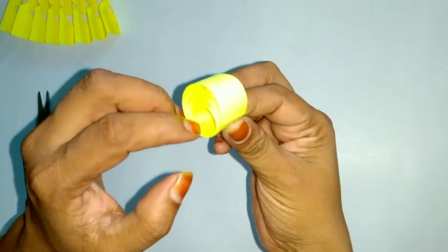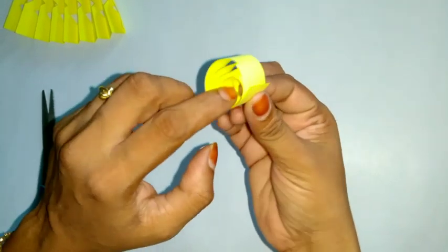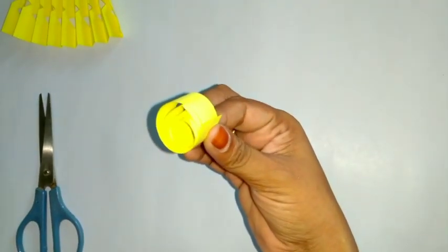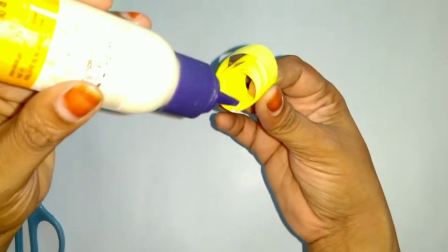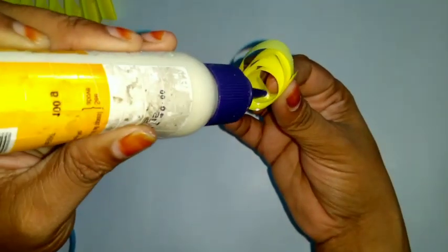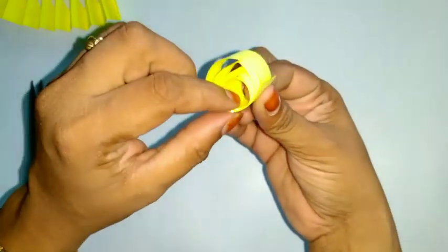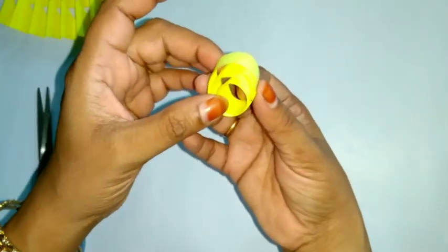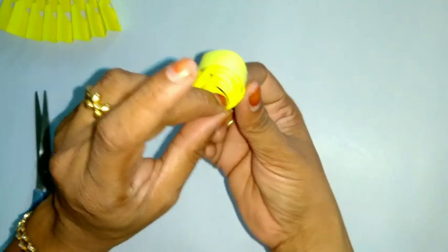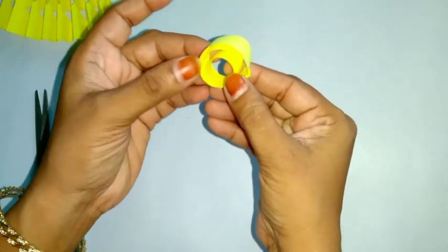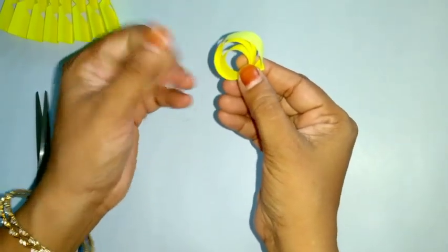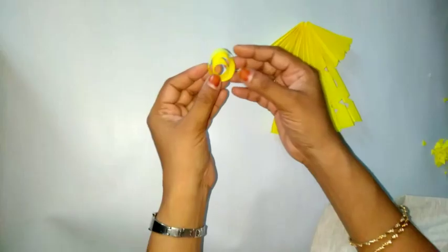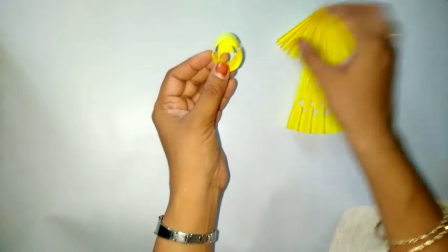Same way inside portion also we have to put some glue. So now we are going to do. So this is how to make a roll.